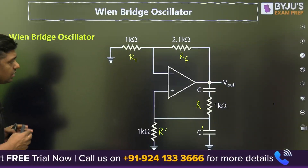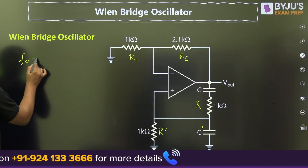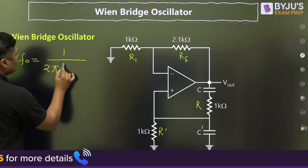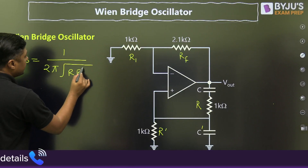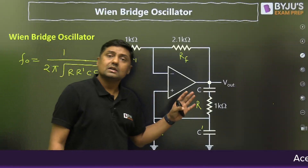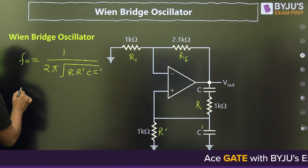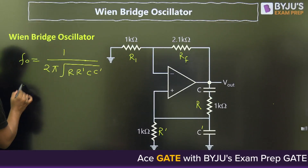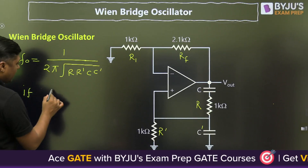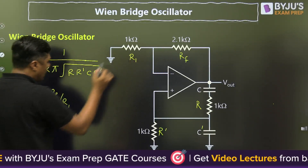The frequency of oscillation is given by: F-naught equals 1 by 2 pi root over R times R-dash times C times C-dash. This is called the frequency of oscillation for this oscillator. The second condition to be satisfied is RF by R1.